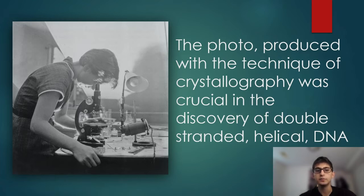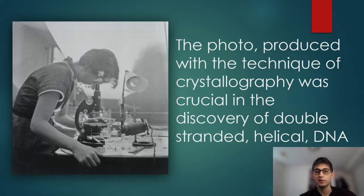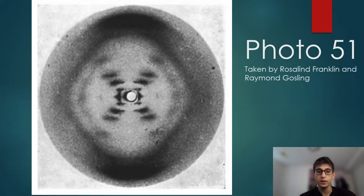The image of B-DNA taken by Rosalind Franklin and one of her graduate researchers, Raymond Gosling, at King's College in 1952 was groundbreaking, and it supplied Watson and Crick with all the information they needed to propose their model of DNA. We've seen this picture many times, but what exactly does it tell us?